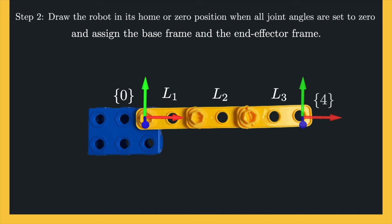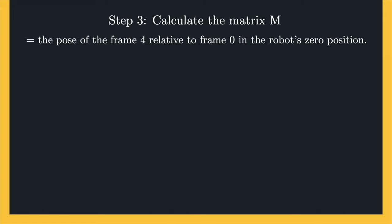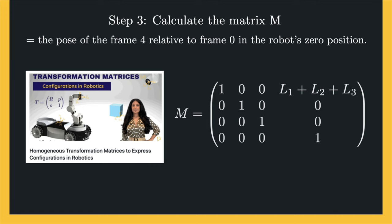The figure shows the 3DOF planar open chain robot in its zero position. Step 3 is to calculate the matrix M, which is the position and orientation of frame 4 relative to frame 0 in the robot's zero position. For our 3DOF planar open chain robot, the matrix representing this pose can be written using transformation matrices. The rotational part is the identity matrix since the orientation of frame 4 is the same as frame 0, and the position of the origin of frame 4 is L1 plus L2 plus L3 units in the direction of the x-axis of the zero frame.